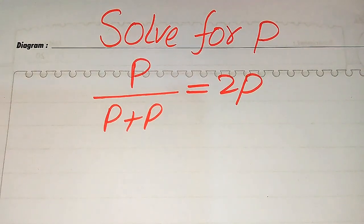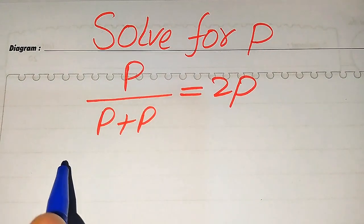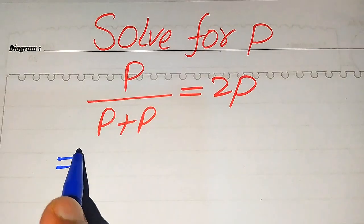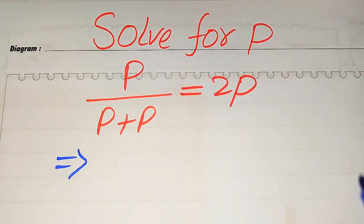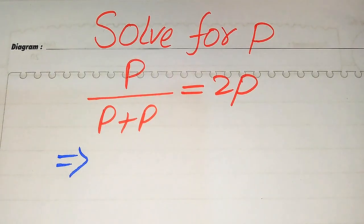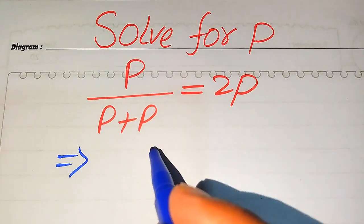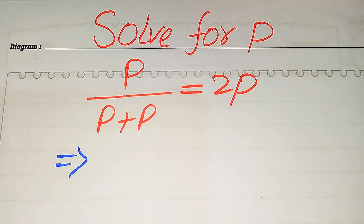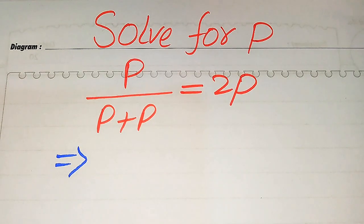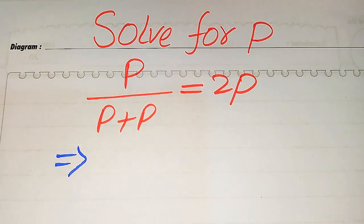Hello everyone. How to solve this problem for the values of p, if we have p divided by p plus p equals 2 times of p, and we solve this problem for all the values of p. Here we first find all the roots of this equation, and at the last we will verify which of the roots are solutions and which of the roots are extraneous roots. Please watch this video to the end.